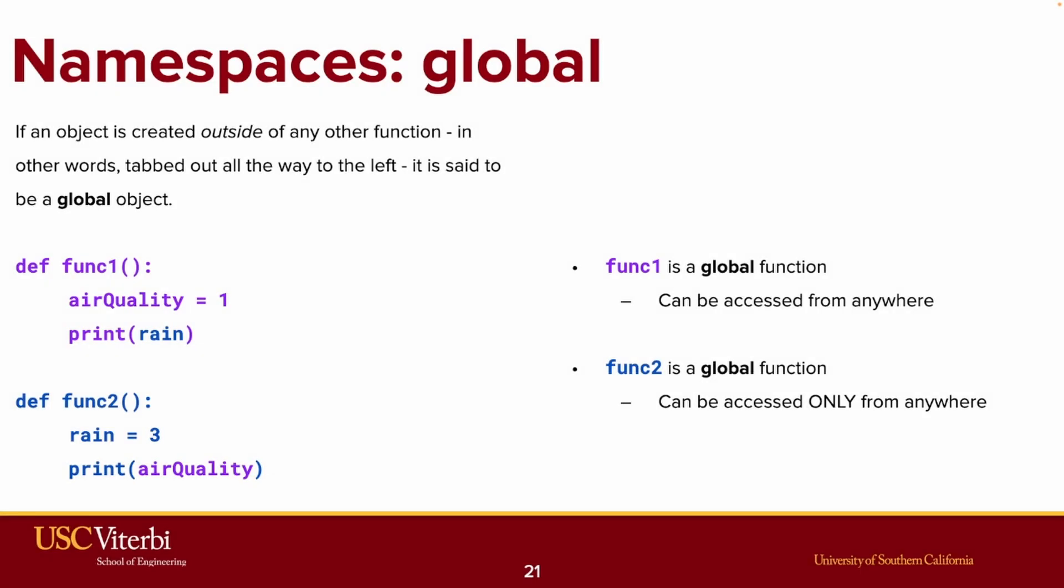There are really two ways to categorize namespaces for what it's worth. Either an object is in the global namespace, or it is in some local namespace. If an object is created outside of any other function, in other words, tabbed out all the way to the left, it is said to be a global object. So in the code on the left here, it turns out that func1 and func2, these two new functions, are global functions because they are outside of any other function. Therefore, they can be seen and accessed from anywhere.